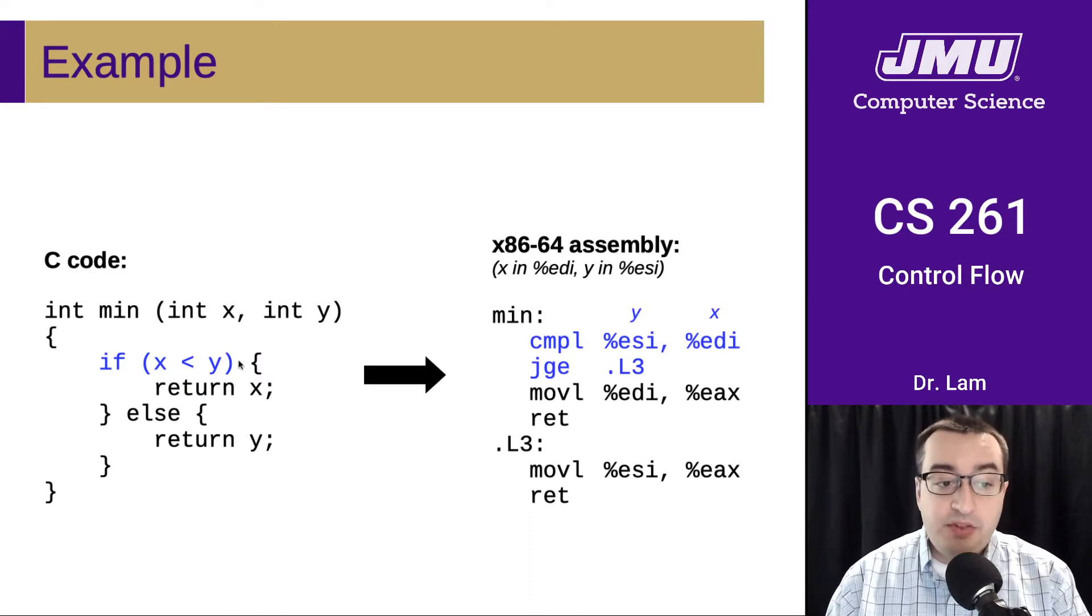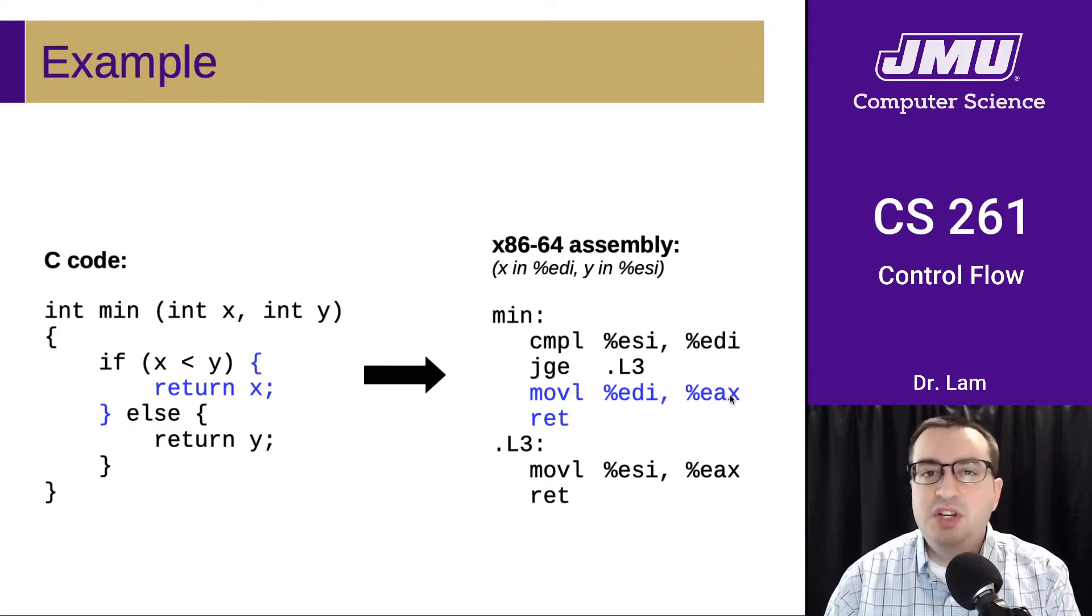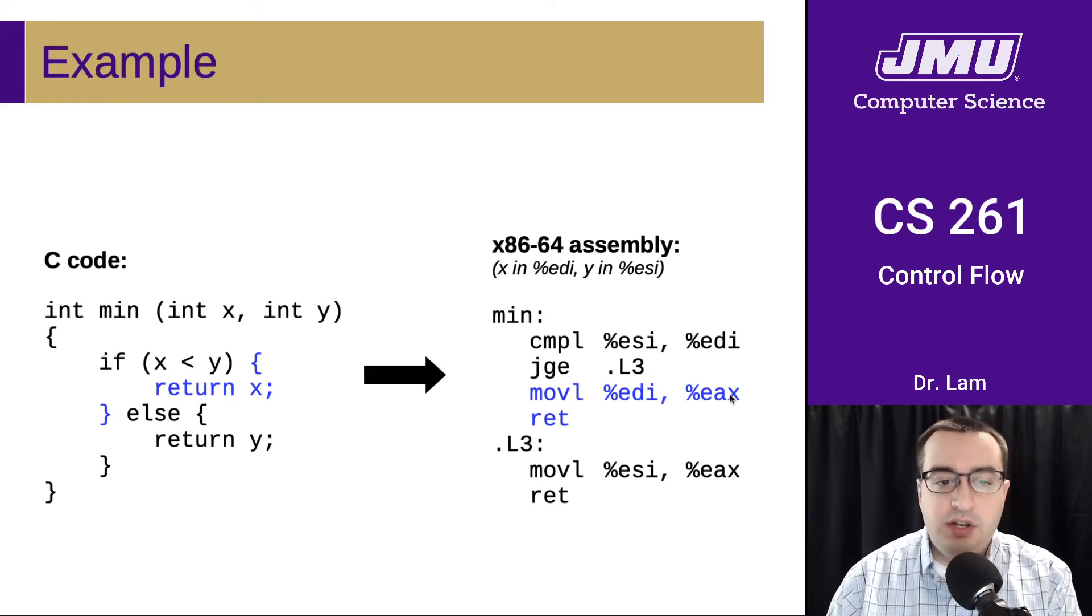Note that this is the opposite condition as this one. This is because if x is less than y, we want to execute this portion where we take x and save it in the return register—which we haven't seen yet, but we'll see it next time. If x is less than y, which means that this condition is not true, then we will execute this part.